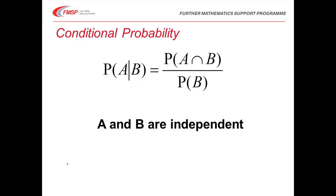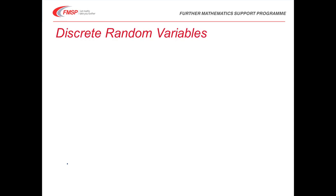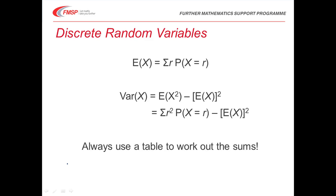Importantly, don't forget that if A and B are independent, then you multiply the probabilities to get the probability of them both happening. This works the other way round as well: if when you multiply the probabilities you get the probability of them both happening, then they are independent. This is an important thing to learn and you'll often be asked to demonstrate this specifically in a question. For discrete random variables, the expected value of X is what you get when you multiply each of the probabilities by the value and add them all up. The variance is the expected value of X squared — multiply the probabilities by r squared — take away the mean squared. Always use a table to work out the sums, and don't forget to check that your probabilities add up to one.